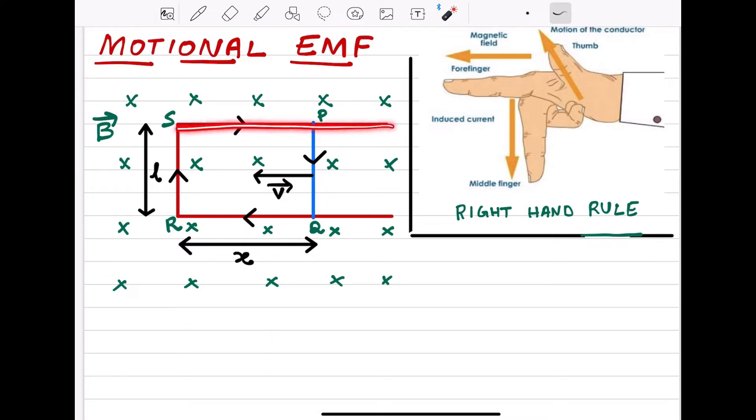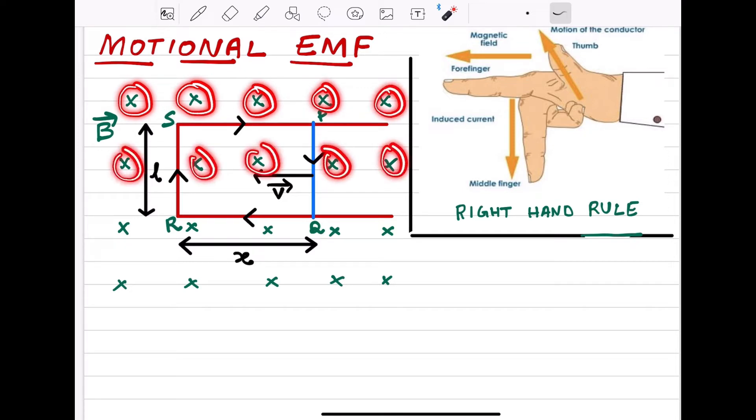What we will do is we will take a conducting frame PQRS, and this rod PQ is a conducting rod which is easily movable on this conducting frame. Let the rod PQ is moving with velocity V and length of the rod let it be L. Let at a particular instant of time the distance RQ is equal to X. Now here we have a uniform magnetic field that is acting into the plane of the paper.